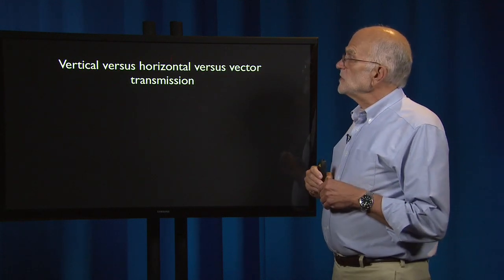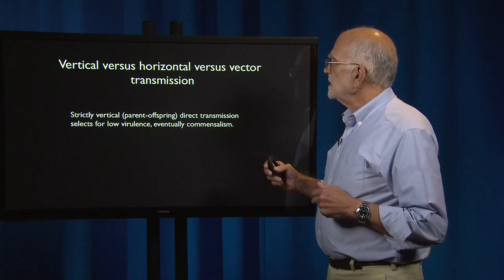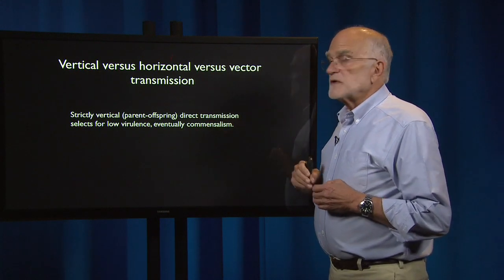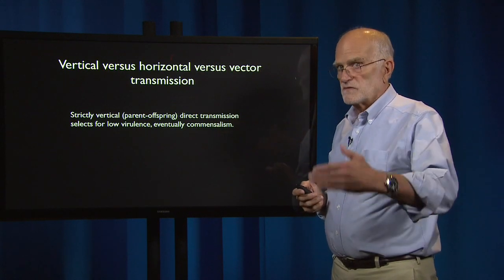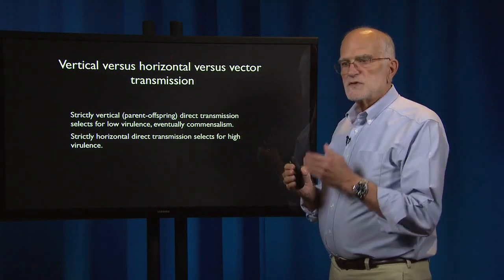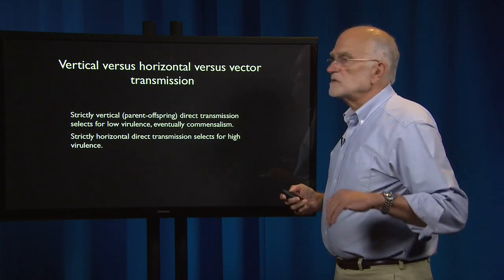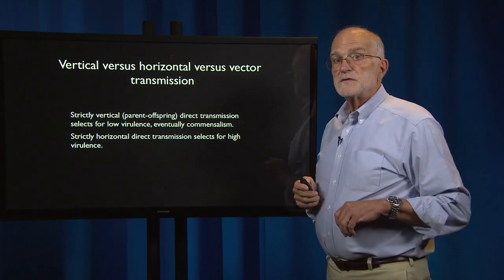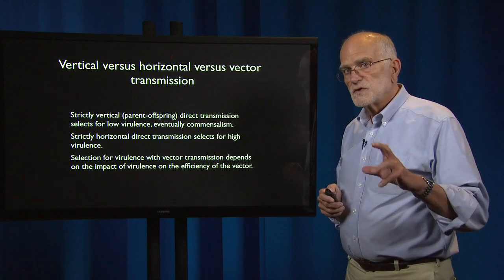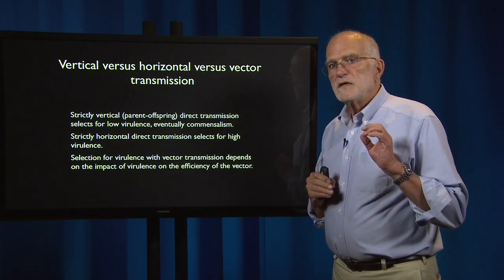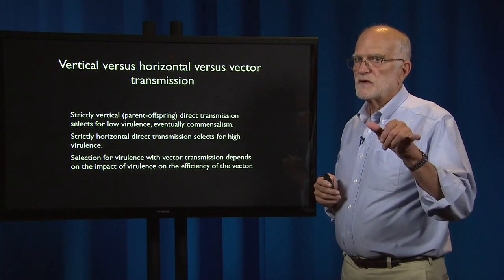The second major issue with virulence is vertical versus horizontal versus vector transmission. Strictly vertical transmission — from parent to offspring — selects for low virulence and eventually for commensalism; this is pathogen transmission mimicking the transmission of genes from parents to offspring. Strictly horizontal transmission — between individuals of the same age class, not necessarily related — selects for high virulence. Selection for virulence with vector transmission depends on the impact of virulence on the efficacy of the vector, since the pathogen's genome has to deal with both the host and the vector, which can have different kinds of immune systems.